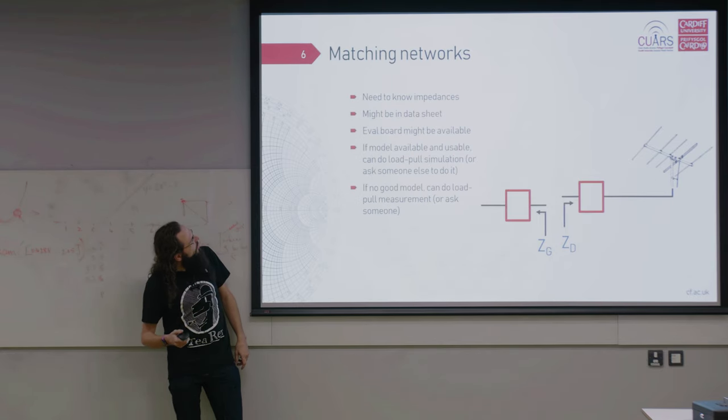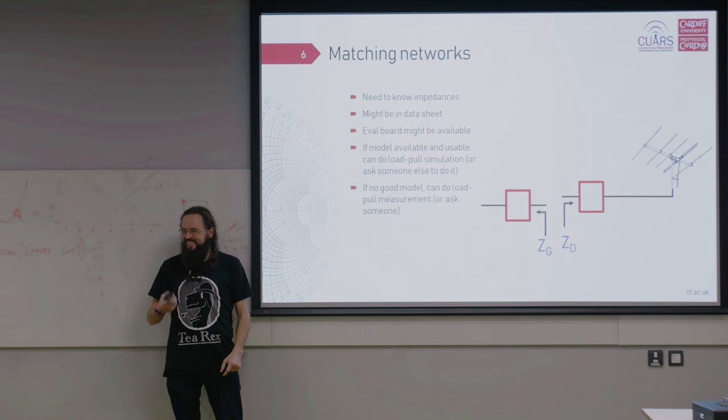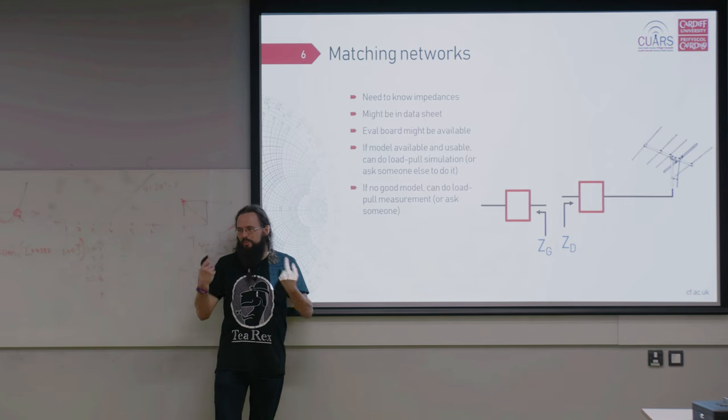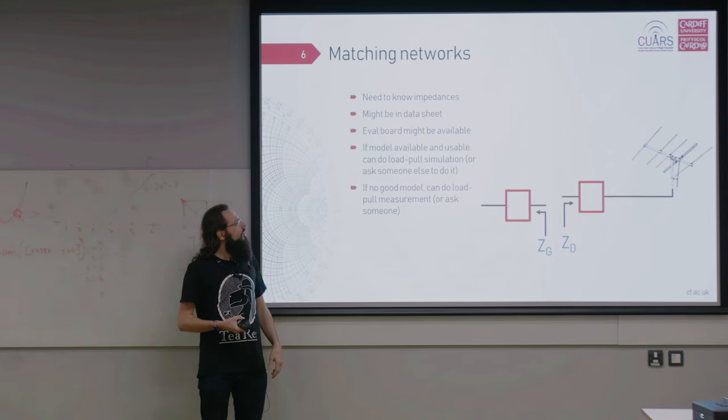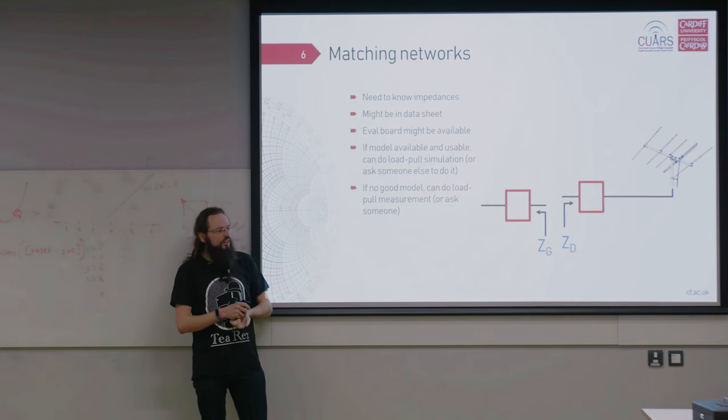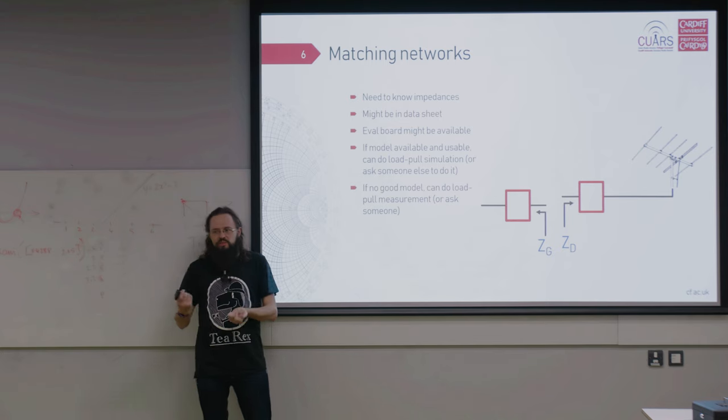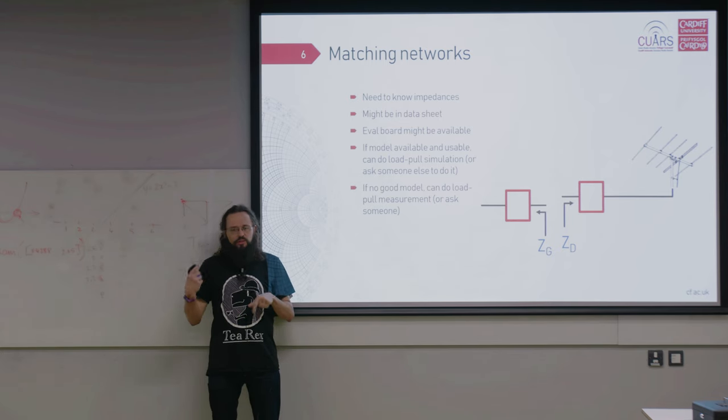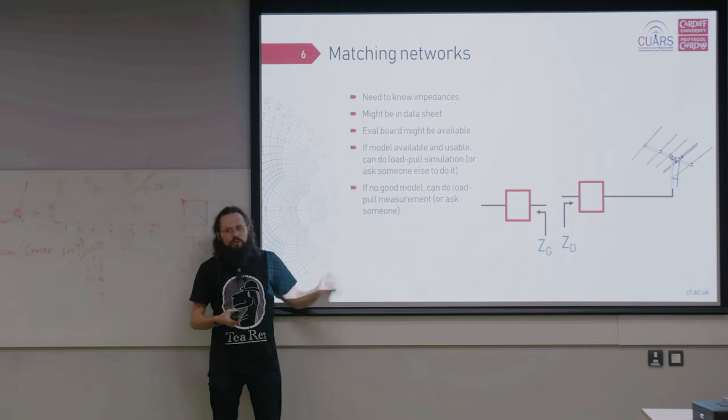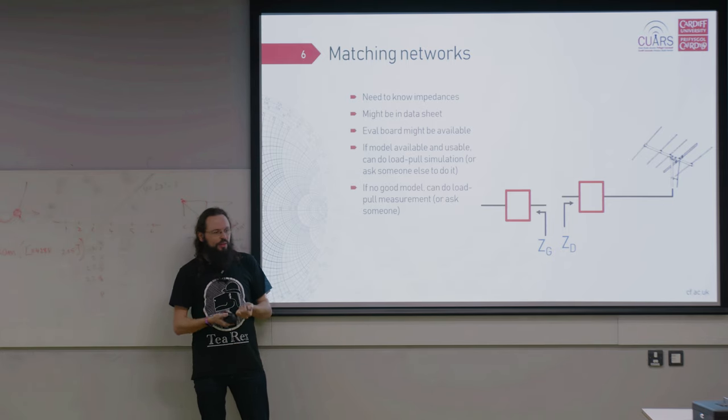For them, to design those matching networks we need the impedances because you can't just take any impedance, connect it to a transistor and antenna and it's going to work. We might have the datasheet and they might give us the impedances if you're lucky. Or there might be an eval board available you could use or you could get the impedances off. You can model them if you have the model and the software. You can do load-pull measurements or ask someone else to do them if you don't have the equipment which is fairly normal.